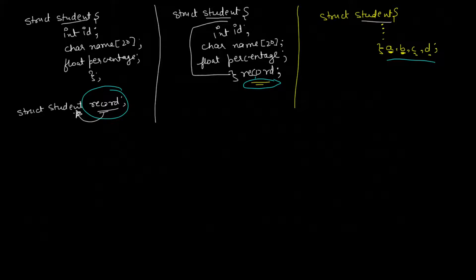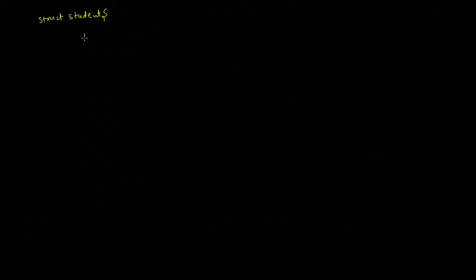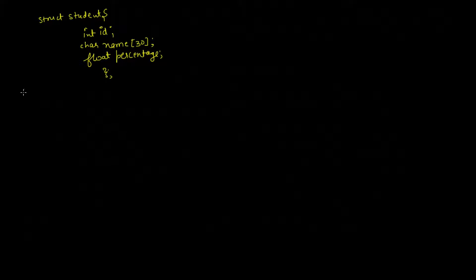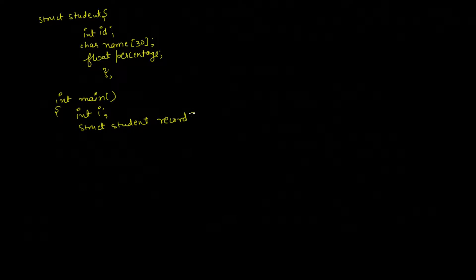So in all these three different ways you can declare variables of your own structures. Now we can even have an array of structures. Let's suppose we have struct student with int id, char name, and float percentage. Then in the main program we do: int i; struct student record[20].